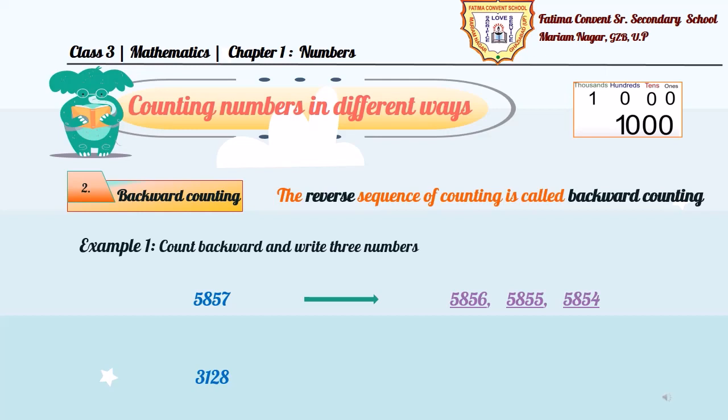Similarly, we have another example here. 3128. So, we can get the backward counting numbers by subtracting 1 from the given number. So, the answer will be 3127, 3126, and 3125. You need to remember here that to get the backward counting numbers, always subtract 1 from the given number. As you get the first number, again subtract 1 from that number. Again, continue the same procedure.